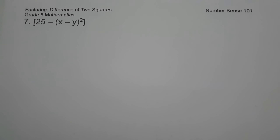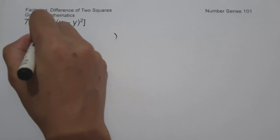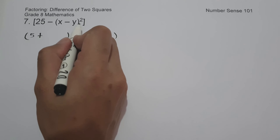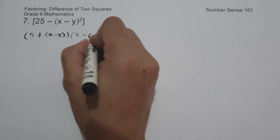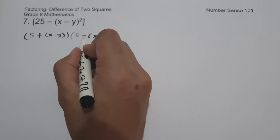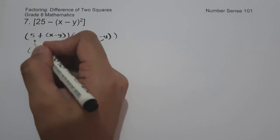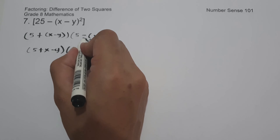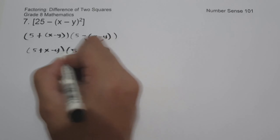On our last example, we have 25 minus the quantity x minus y raised to the 2nd. To find the factor, let us have the product of the sum and difference of two terms. The square root of 25 is 5. Since we have a binomial on the last term, the square root of (x minus y) raised to the 2nd is quantity x minus y. Using parentheses to distribute the negative sign, we get quantity 5 plus x minus y times quantity 5 minus x plus y, after distributing: negative times x is negative x, and negative times negative y is positive y.